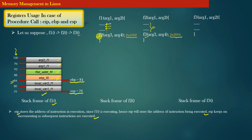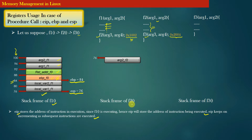Now suppose f1 has invoked f2. The address of the instruction responsible for invoking f2 is 1002. When f1 invokes f2, the very first thing that happens is pushing the arguments of f2 onto the stack memory in reverse order. We are now setting up the stack frame of f2.